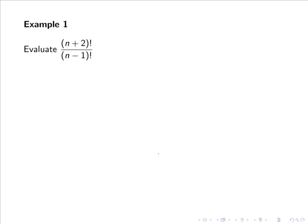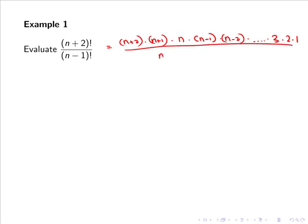Now let's evaluate n plus 2 factorial divided by n minus 1 factorial. Here, n plus 2 factorial is n plus 2 multiplied by n plus 1 multiplied by n multiplied by n minus 1 multiplied by n minus 2, and so forth all the way down to 3 by 2 by 1. And at the bottom we have n minus 1 factorial, which is n minus 1 by n minus 2 and so forth all the way down to 3 by 2 by 1.